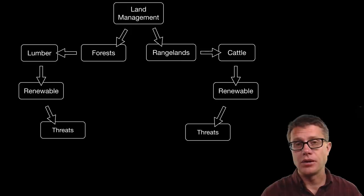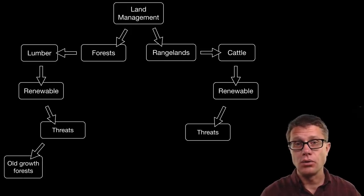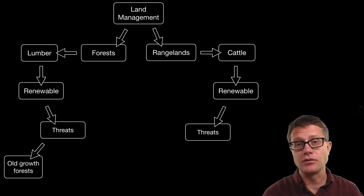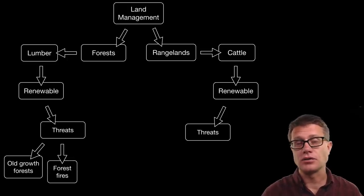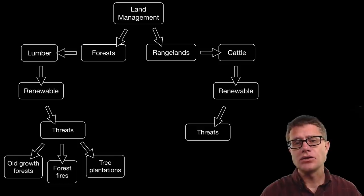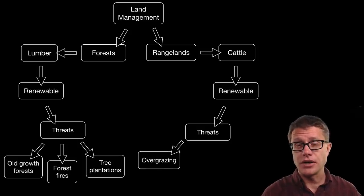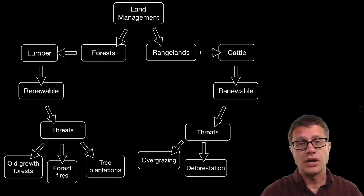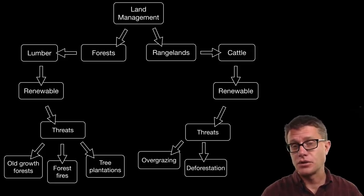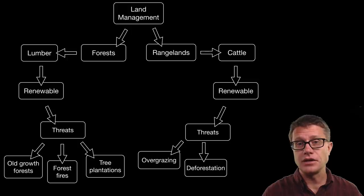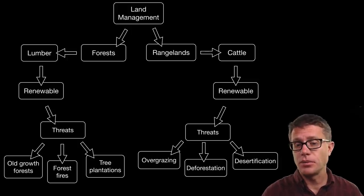If you have an old growth forest, those are trees that are really old — sometimes hundreds if not a thousand years old — they are never going to come back in a renewable fashion. We also have forest fires. And tree plantations are not threats to themselves, but are threats to the biodiversity of our planet. If we are looking at grazing, we could have overgrazing where you are removing the producers. We could have deforestation where you cut down trees to provide for grazing. And these two things together can promote desertification.